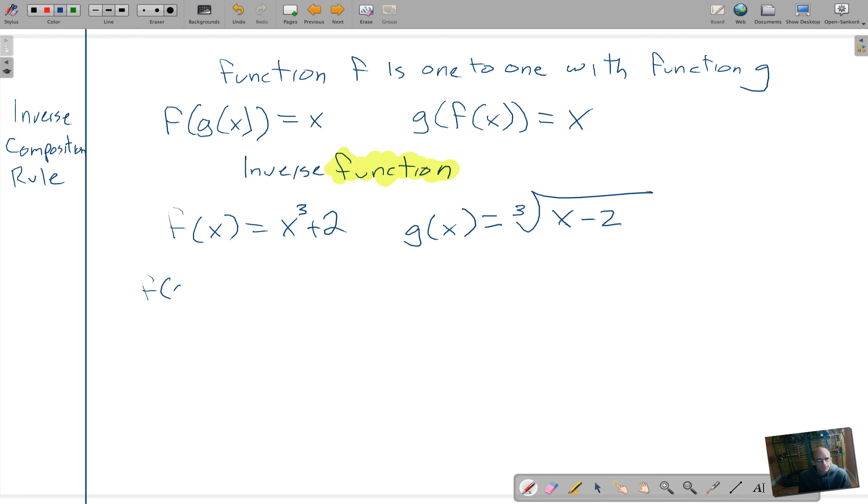We're going to look at f(g(x)). And so g(x) is this piece here, we're just going to toss that here. And so we have the cubed root of (x minus 2) cubed plus 2. Now you should see that cube disappeared. We have x minus 2 plus 2. These cancel out. So f(g(x)) is equal to x. So that follows this rule right here. So now we need to check the other way.